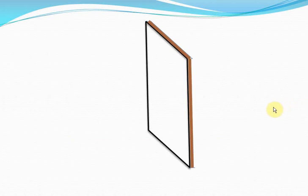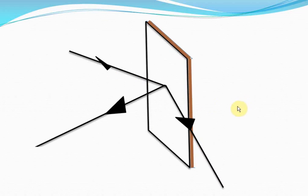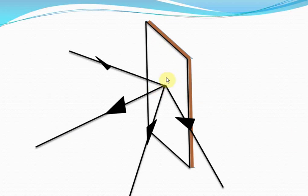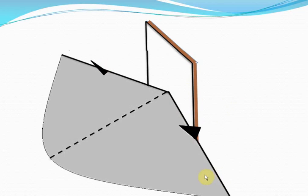The second law of reflection states that the incident ray, the reflected ray, and the normal are in the same plane. Now let's say an incident ray is coming like this — in which direction will the reflected ray be? In three dimensions, you can have an angle of incidence equal to the angle of reflection in any direction possible. The reflected ray could go upwards or sideways. The catch is that you draw a normal at the point of contact, and the incident ray, the normal, and the reflected ray will all be in the same plane. This is the second law of reflection.